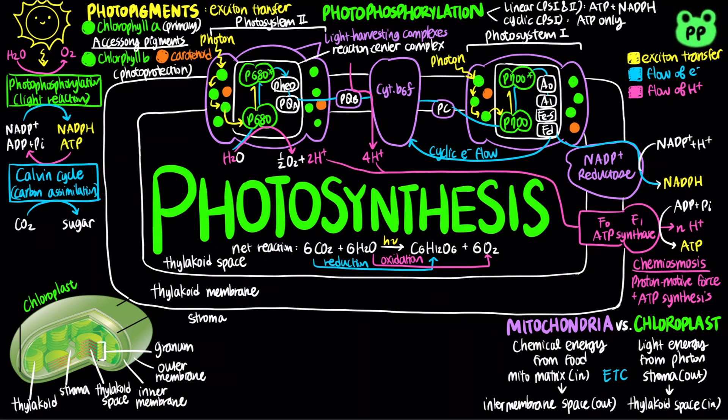The cyclic electron flow uses only Photosystem I and produces ATP but not NADPH. The partitioning of electrons between linear and cyclic electron flow allows plants to adjust the ratio of ATP to NADPH produced in photophosphorylation to match their need for these products in the Calvin cycle and other biosynthetic processes.